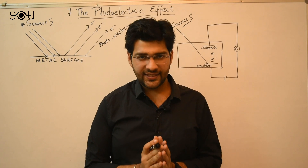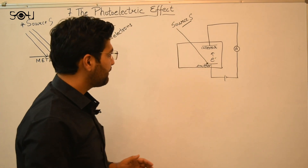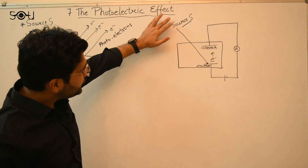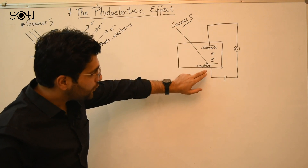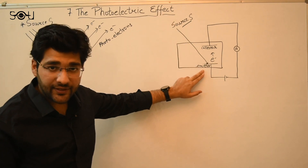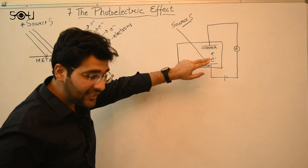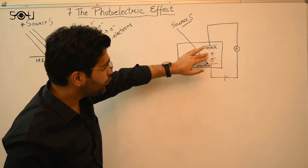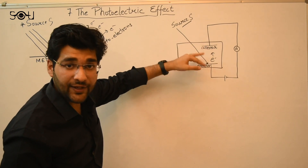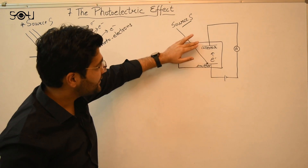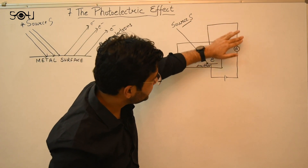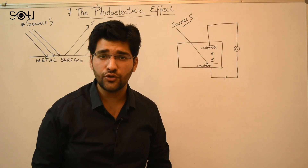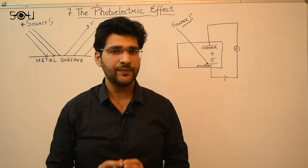The setup of this experiment is very easy to understand. We have a source of light S; light from this source falls on an emitter or a metal surface. Electrons are ejected from this emitter and travel to the collector, then through the external circuit, forming an electric current also known as the photocurrent.